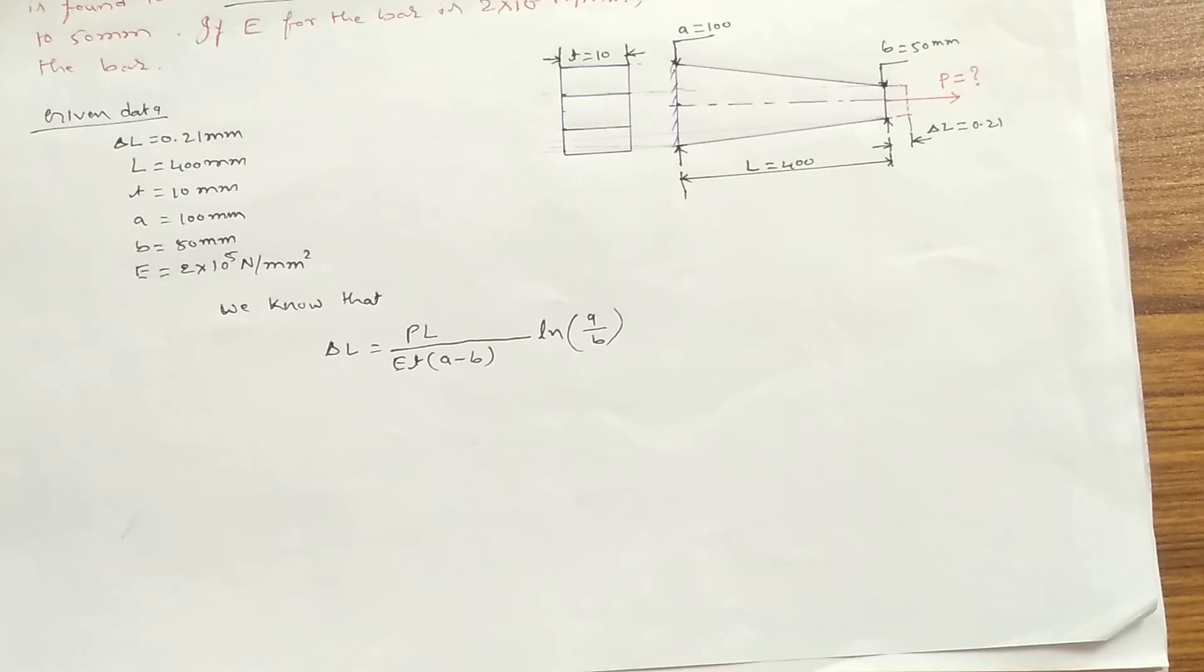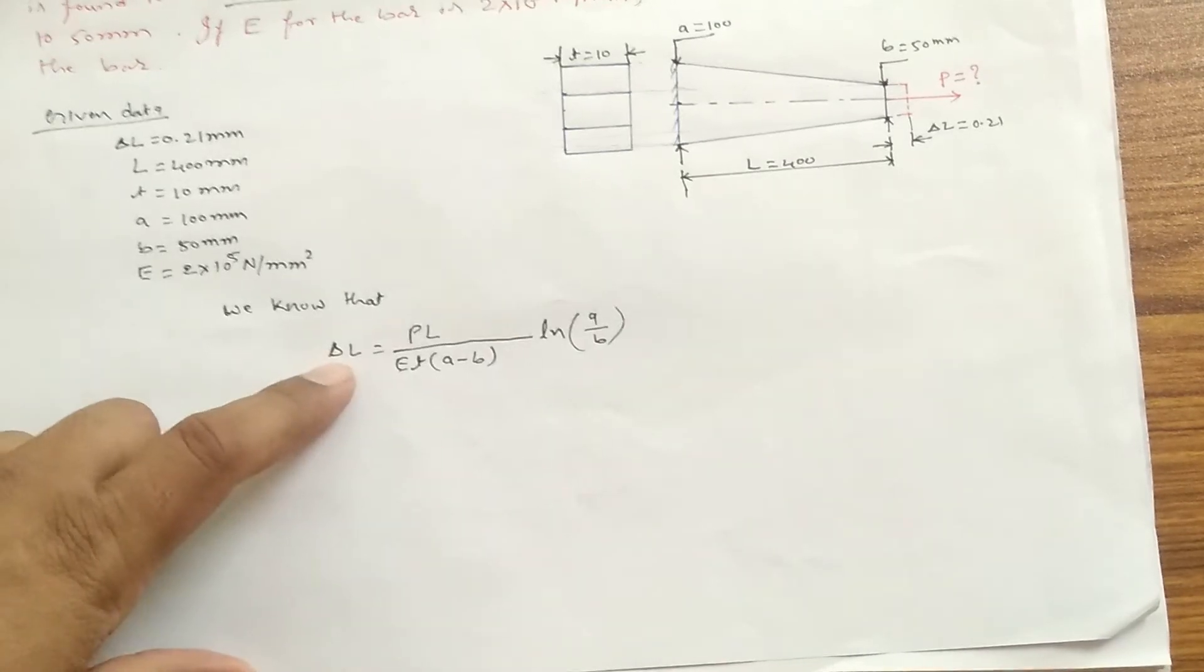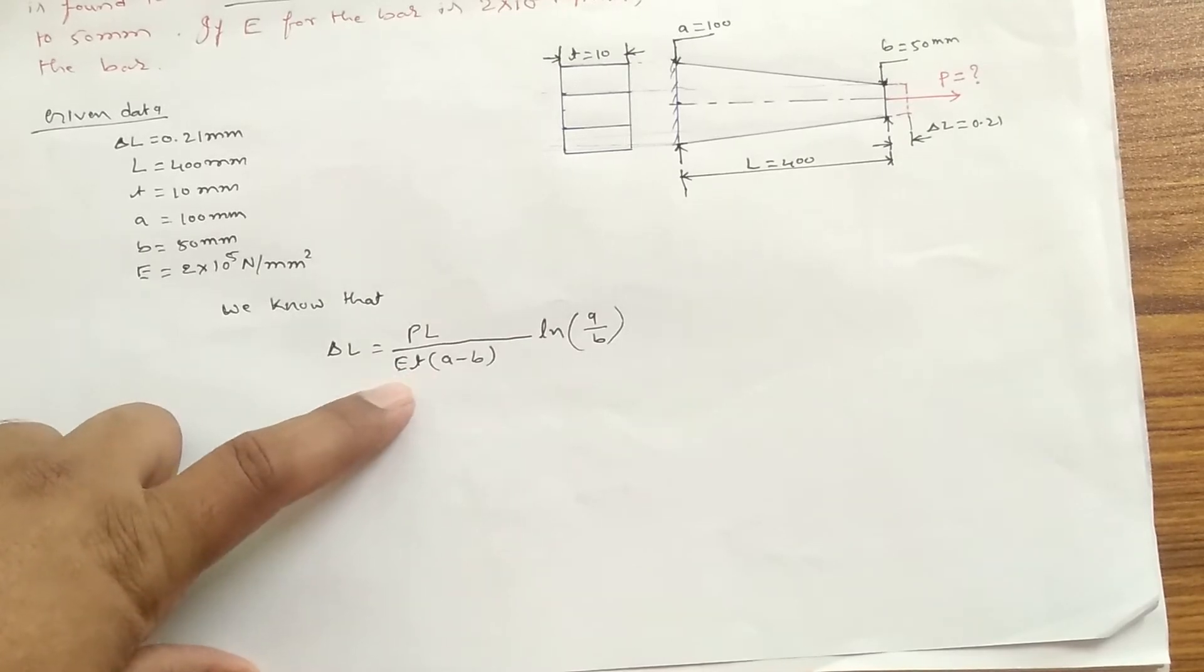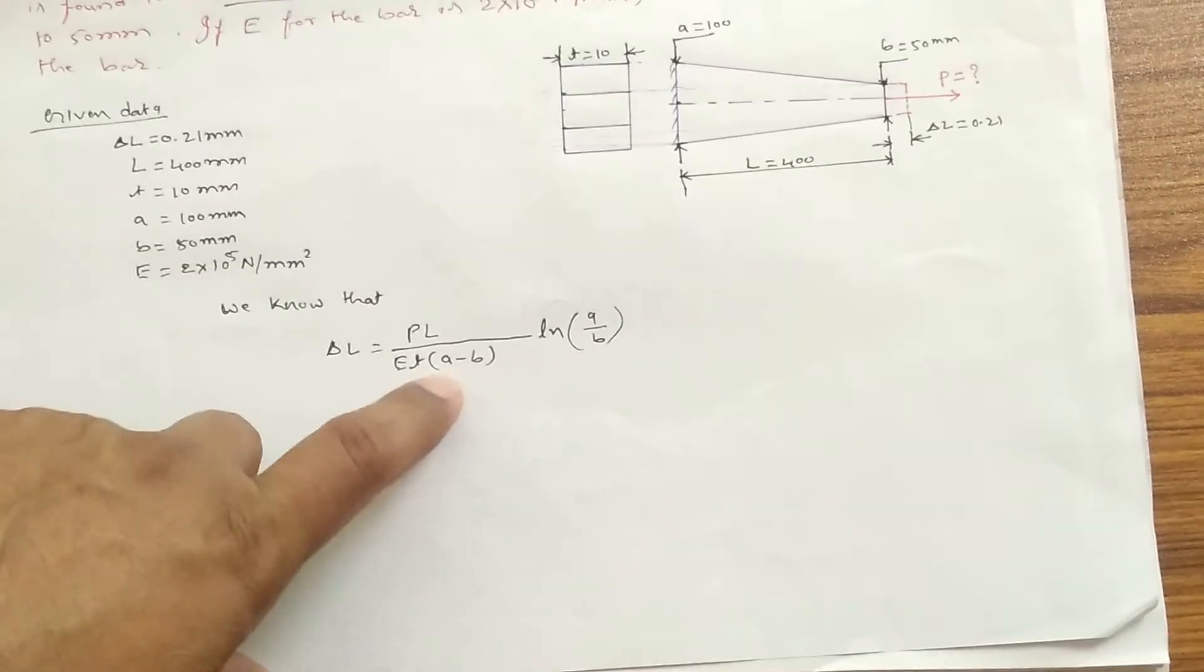So the condition is—I will just repeat the condition—for tapered rectangular bar which is subjected to axial load, we will be using the formula to find the change in length. That is delta L = PL / [ET(A-B)] × ln(A/B).